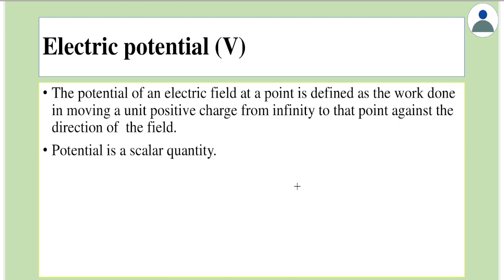Think of a charge — for example, a positive charge Q. We know that this positive charge creates its own electric field, and the electric field for a positive charge goes out radially. Any charge configuration will create its own electric field, but dealing with electric field is difficult because it is a vector quantity. The problem becomes even more complex when we have more charges present. To find the field at a point becomes difficult, so we need another parameter to describe the charge configuration — something simpler.